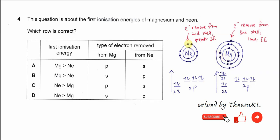Because the electron removed from neon is closer to the nucleus, attraction towards this electron is stronger. So this means the first IE for neon is much stronger than magnesium. So we must choose C or D.